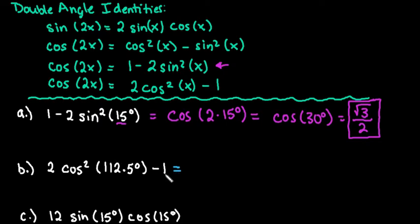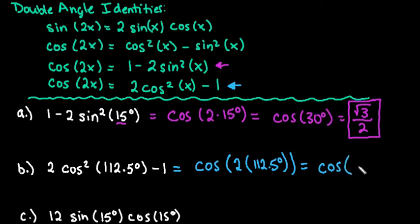So moving on to the next one. This time we have 2 cosine squared of the angle measure minus 1. So for this particular one, we are going to be using the very bottom form of cosine 2x. So we still have the same thing. We really have cosine of 2 times our angle measure 112.5 degrees. And so if we simplify that 2 times 112.5 degrees, we would end up with cosine of 225 degrees.